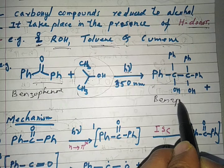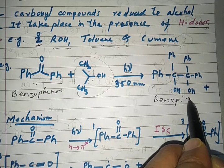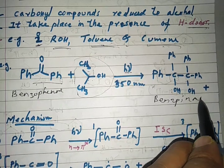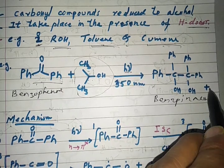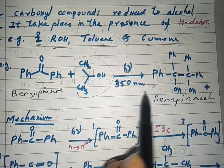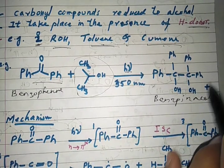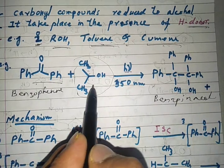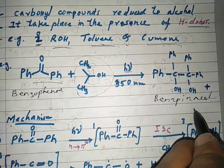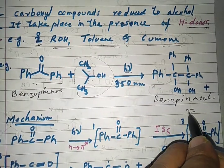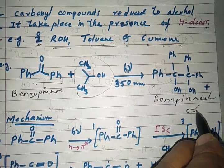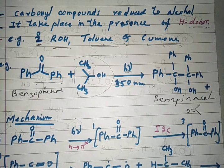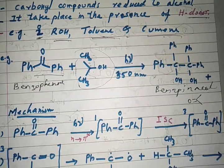So benzopinacol is the product. How is it formed, and what is the other side product? There is also formation of acetone as a side product. Now let us go through the mechanism.